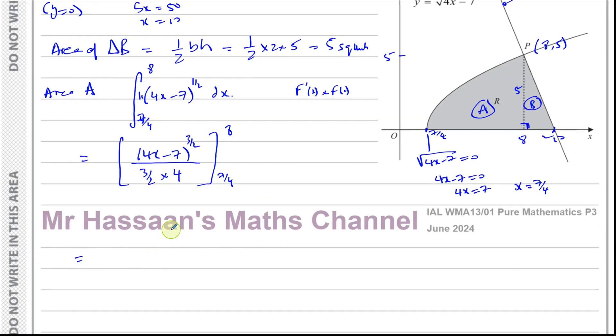If we simplify this, 2 and 4 cancels to give 3 times 2 is 6. So you're left with 1 over 6, which you can take outside, times 4x minus 7. What does this mean to the power of 3 over 2? It means the square root of this all cubed. Remember, a to the power of m over n is the same as the nth root of a to the power of m. So square root of something cubed, between the limits of 8 and 7 over 4.